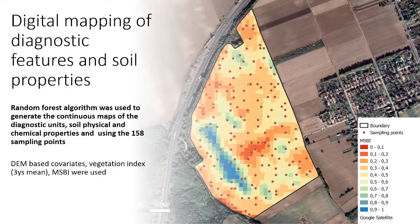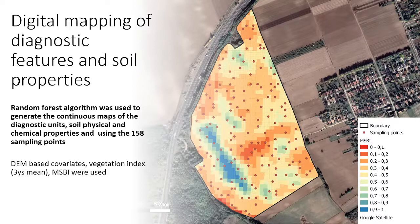A random forest algorithm was used to create continuous soil property classification unit maps for further analysis. For the classification covariates, DEM-based topographic layers and five-year mean NDVI and MSAVI were used.